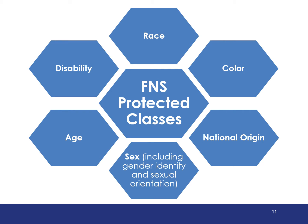There are specific laws and regulations that provide for the six protected classes in food and nutrition service programs. These include race, color, national origin, sex — including gender identity and sexual orientation — age, and disability. A protected class may vary somewhat between federal programs. For example, other federal programs may include marital or family status, parental status, and protected genetic information.